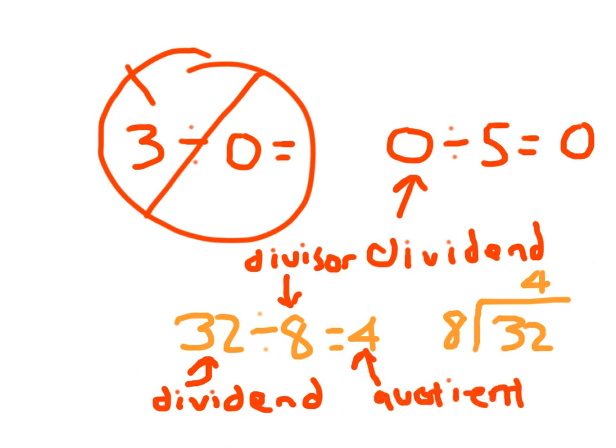Can you divide by 0? No. Can you divide 0 by any number? Yes. What do you get? 0. Remember your division rules. And if you don't, rewind the video, watch it again, and keep practicing them.